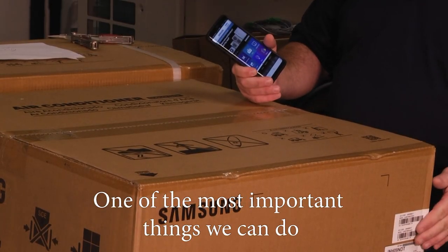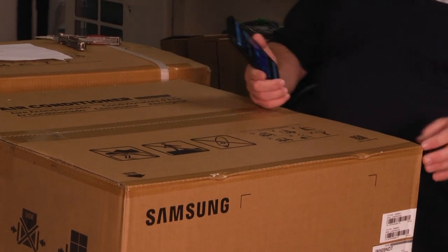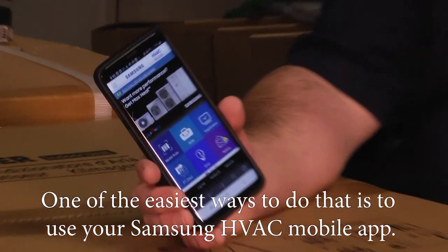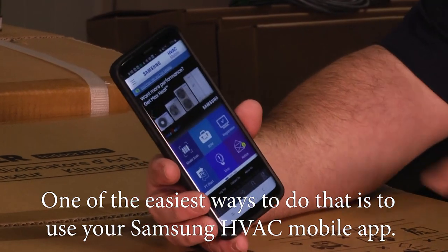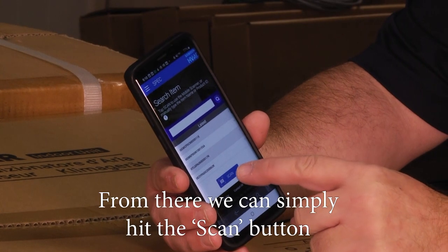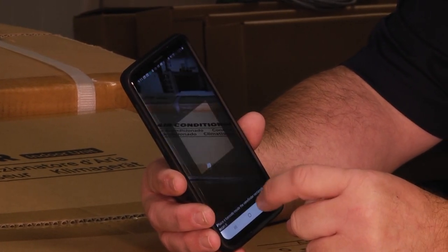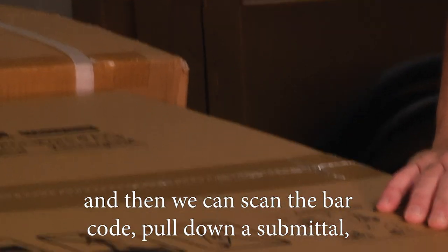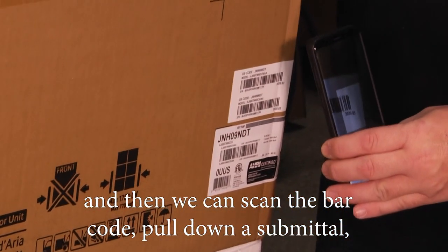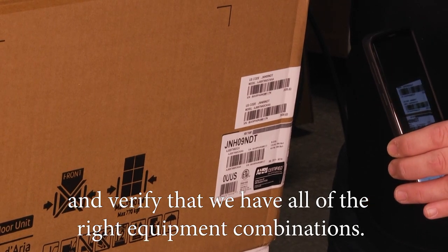One of the most important things we can do is verify that we have the correct model numbers for our installation. One of the easiest ways to do that is to use your Samsung HVAC mobile app. We can scroll over to the specifications tab, hit the scan button, scan the barcode, pull down a submittal, and verify that we have all of the right equipment combinations.